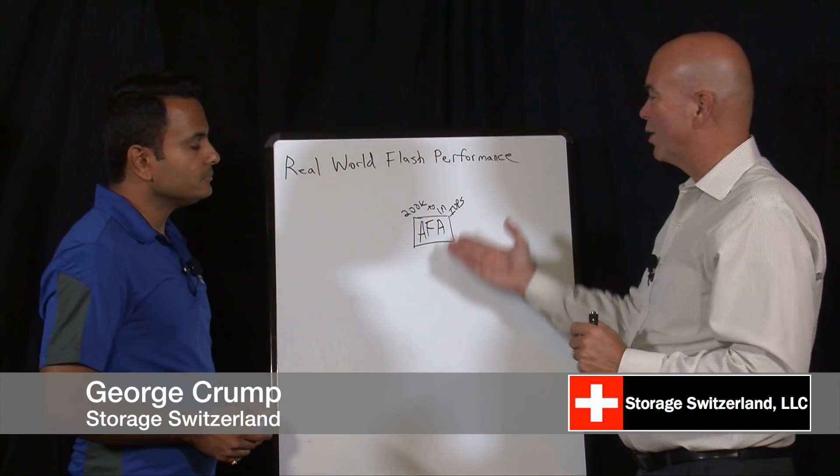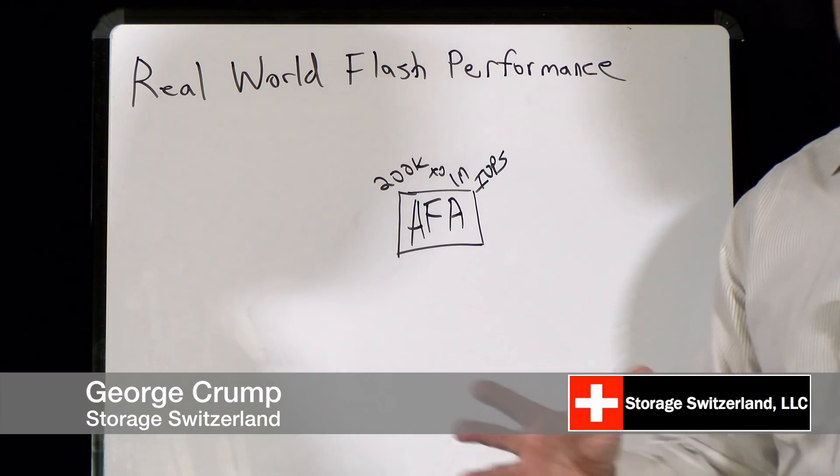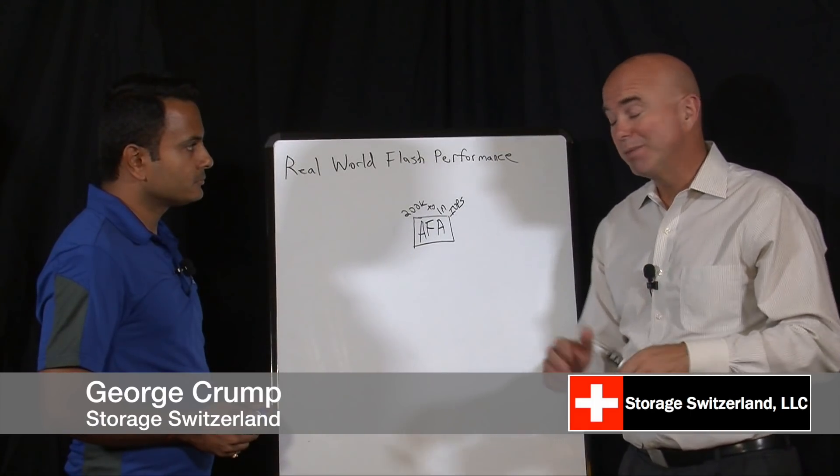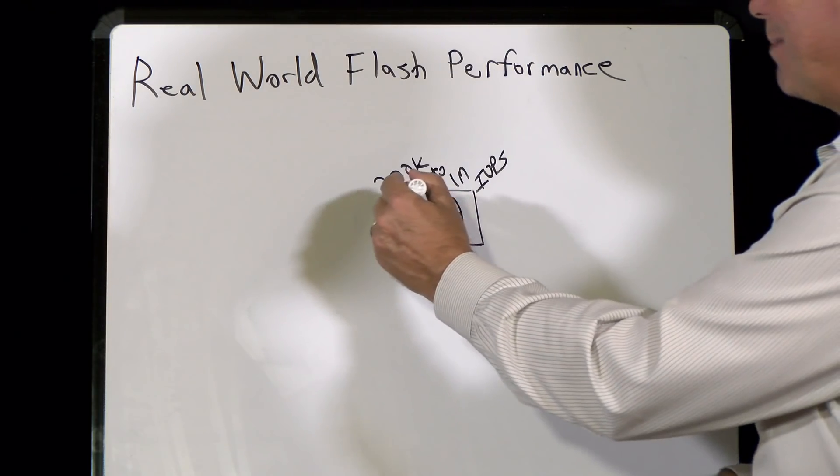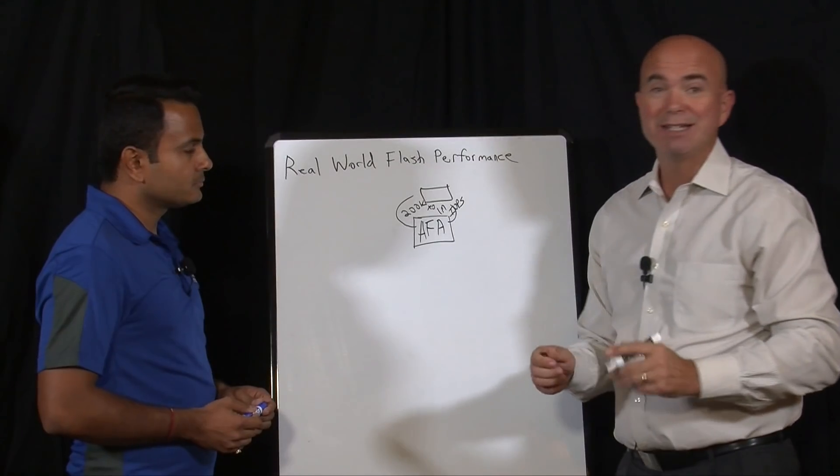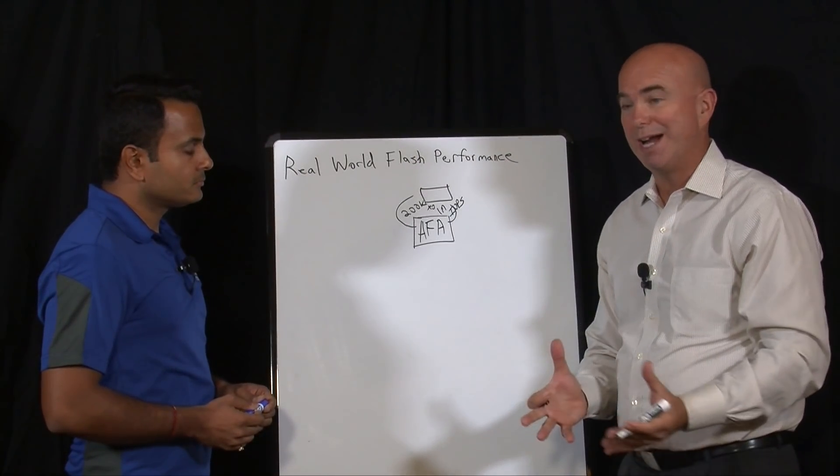We've seen all flash arrays claim anywhere from 200,000 IOPS to over 1 million IOPS and even much higher than that. But the problem is all these performance tests are happening in a perfect lab environment where essentially the all flash array is connected directly to some sort of IOPS generator.